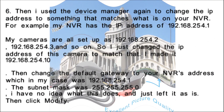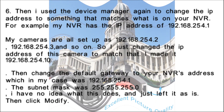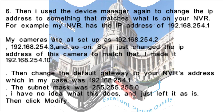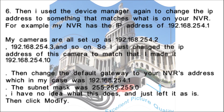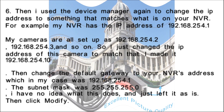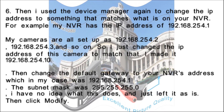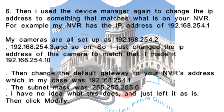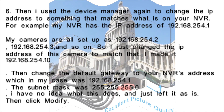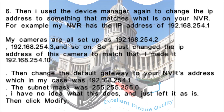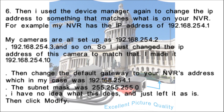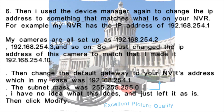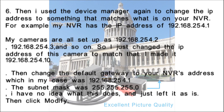Step six: I used the Device Manager again to change the IP address to something that matches what is on your NVR. For example, my NVR has the IP address 192.168.254.1, and my cameras are all set up as 192.168.254.2, 192.168.254.3, and so on. I made this camera 192.168.254.10, changed the default gateway to 192.168.254.1, and left the subnet mask as 255.255.255.0, then clicked Modify.